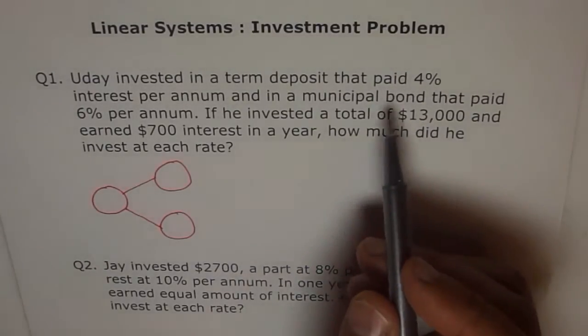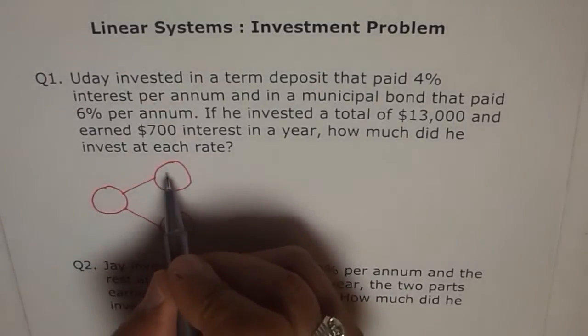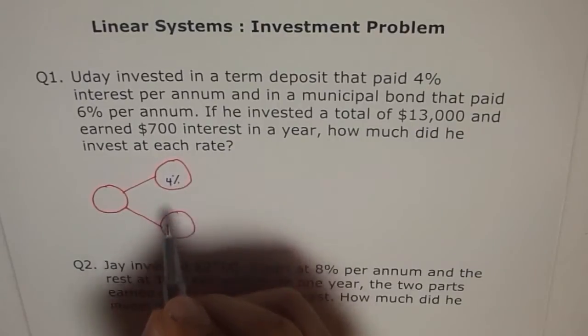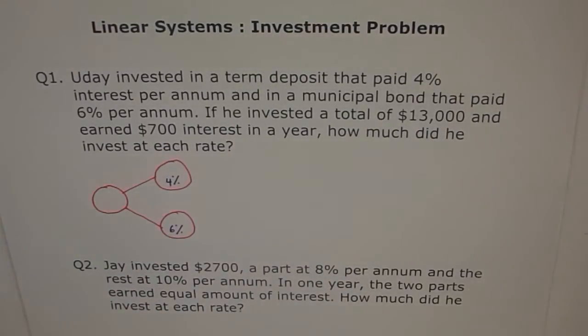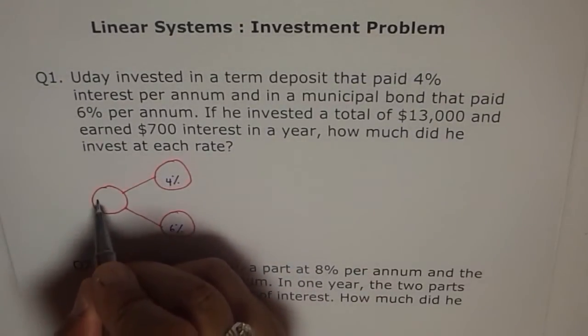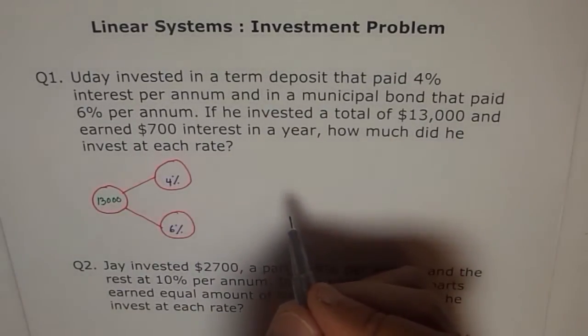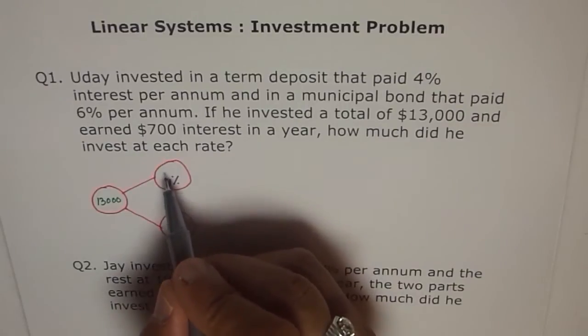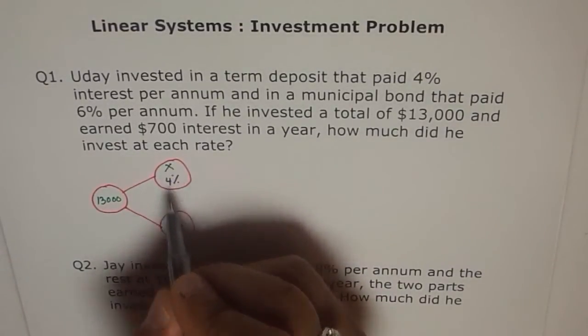Let's say, first, let's take interest rate. Here, the interest rate is 6%, 4% and 6%, let's take 4% first. And this is 6%. What is the total amount for us? Total amount is $13,000. And let us assume that he invests X amount here and Y there. Let's say, X here and Y here.